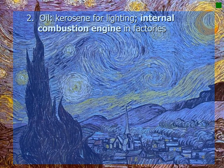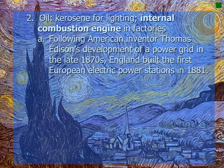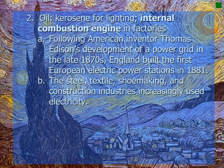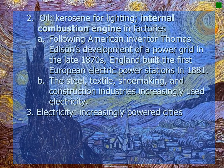Oil was another major product of the Second Industrial Revolution. Kerosene for lighting as well as the internal combustion engine were now possible in factories. Following American inventor Thomas Edison's development of a power grid in the late 1870s, England built the first European electric power stations in 1881. The steel, textile, shoemaking, and construction industries increasingly used electricity for lighting, and electricity increasingly powered large cities.